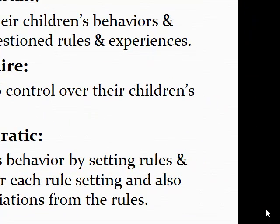Parenting styles are usually divided into three different categories. The first is dictatorial, also called authoritarian. This is where parents try to control their children's behavior and attitudes through unquestioned rules — children are not allowed to ask questions, they have to do what they're told, and they're not necessarily told why.